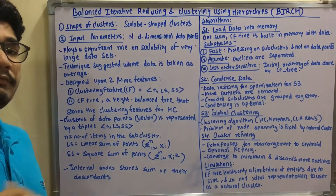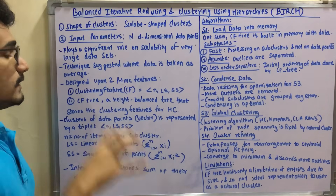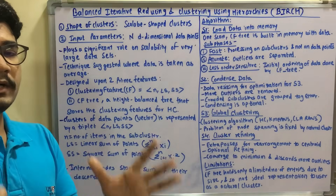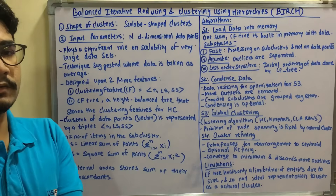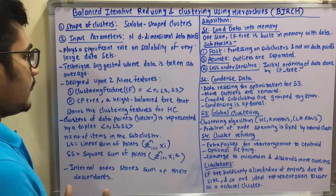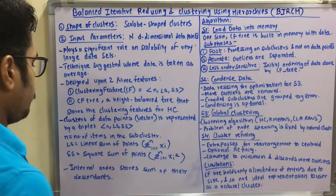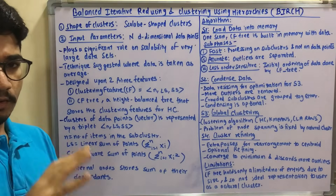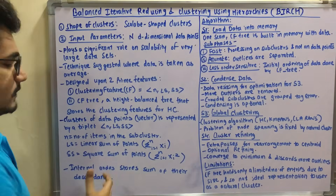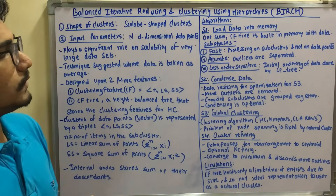The second feature is the CF Tree, which is the Clustering Feature Tree — a balanced height tree that stores the clustering features for hierarchical clustering. It is already built in memory so that whenever data points are loaded, it automatically creates and represents the clustering feature tree. All internal nodes of these clusters are stored as the sum of their descendants, which are their child nodes.